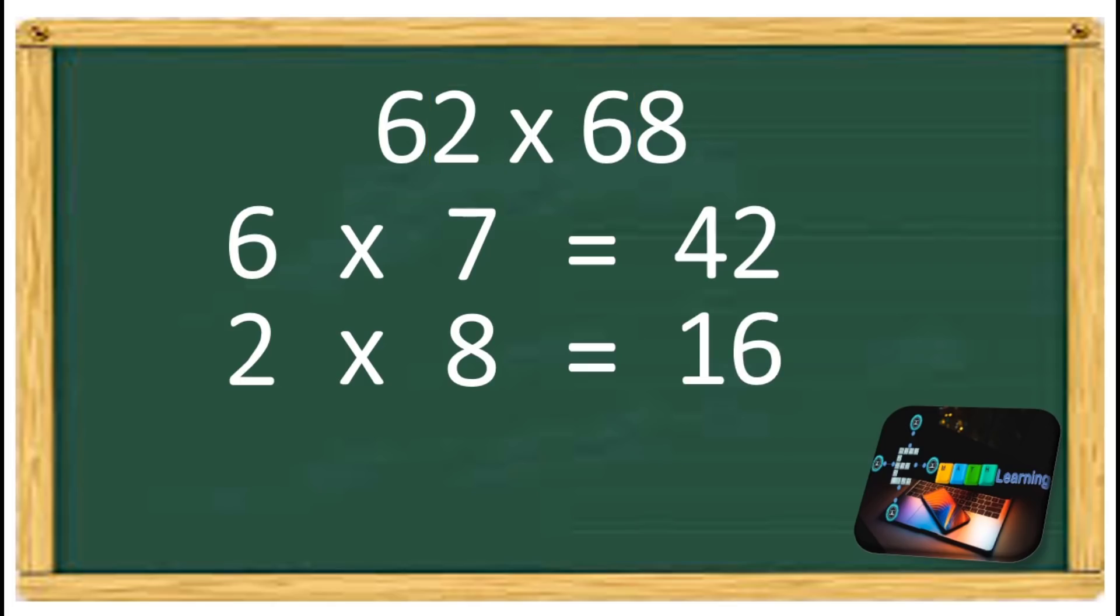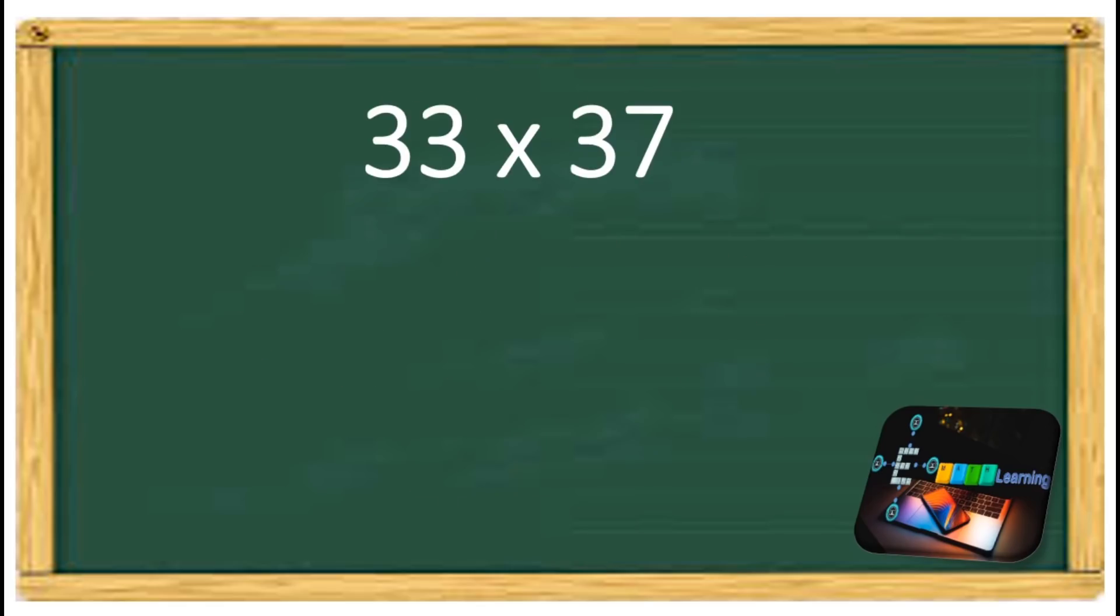62 times 68 equals 4,216. Let's try another example, 33 and 37.